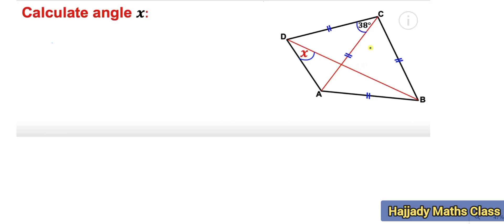Hello viewers, welcome to Adelima Class. Today we shall be solving this question — we want to calculate angle x. The first thing to note is that angle ABC is an equilateral triangle, meaning all angles and all sides are equal. So our triangle ABC is equilateral.